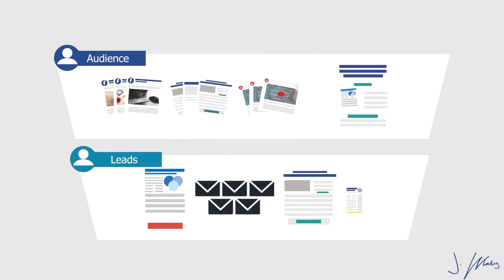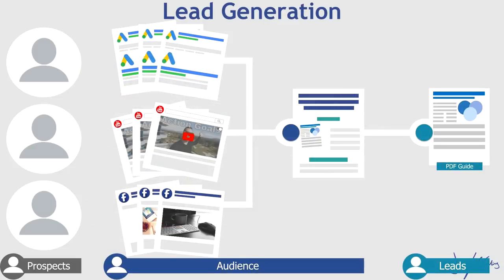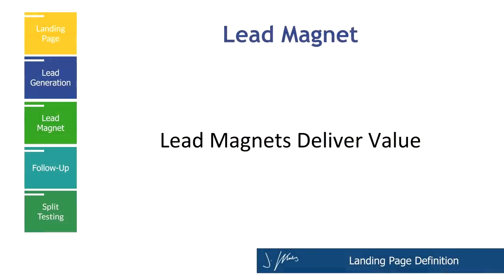We'll be using ads and content to drive traffic to this landing page. Once they enter their name and email, they'll not only get the lead magnet, but they'll be put into an email sequence that eventually pushes them over to a sales page. This next diagram shows how the landing page fits into our process. Whenever we're driving traffic via ads or content, we want people to go to our landing page, get the lead magnet, and enter their contact information. That's the lead generation process.